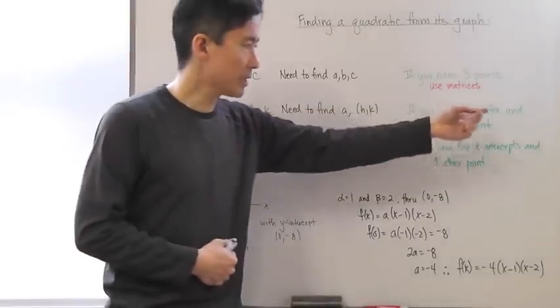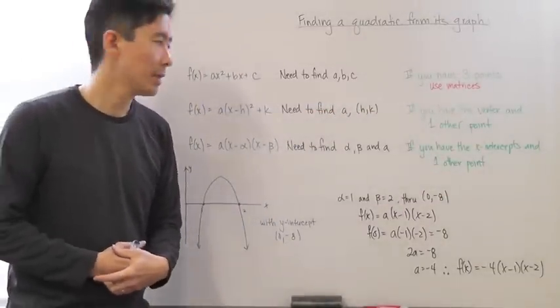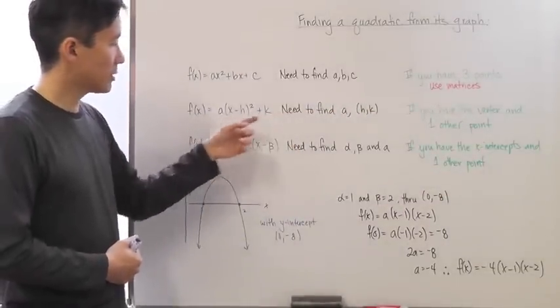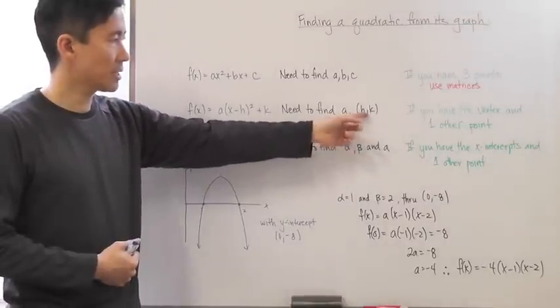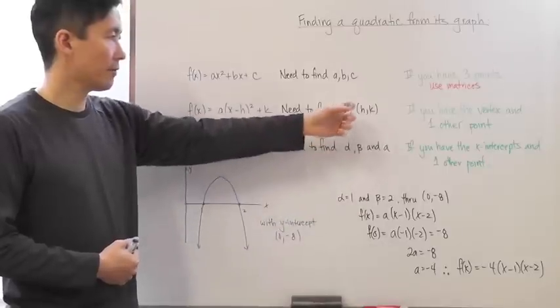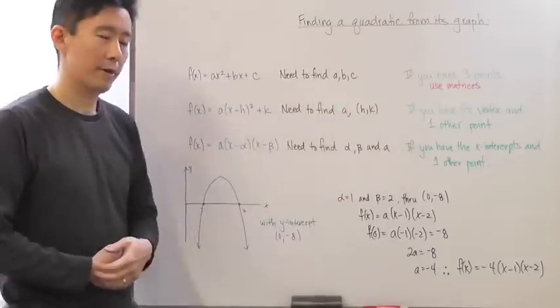If you have the vertex and one other point, then of course you should use this because the vertex is always going to be h, k, and then after that, if you have one other point, you should be able to find the value of a.